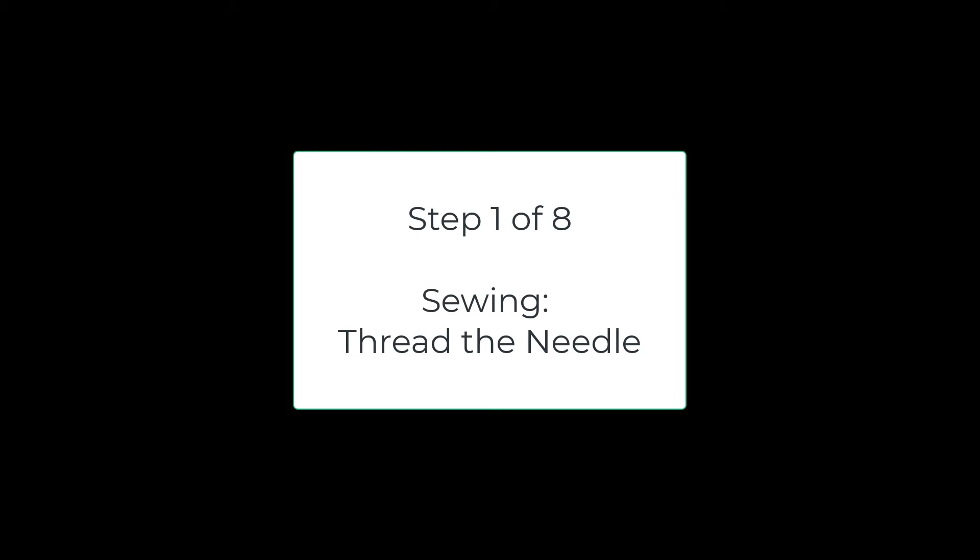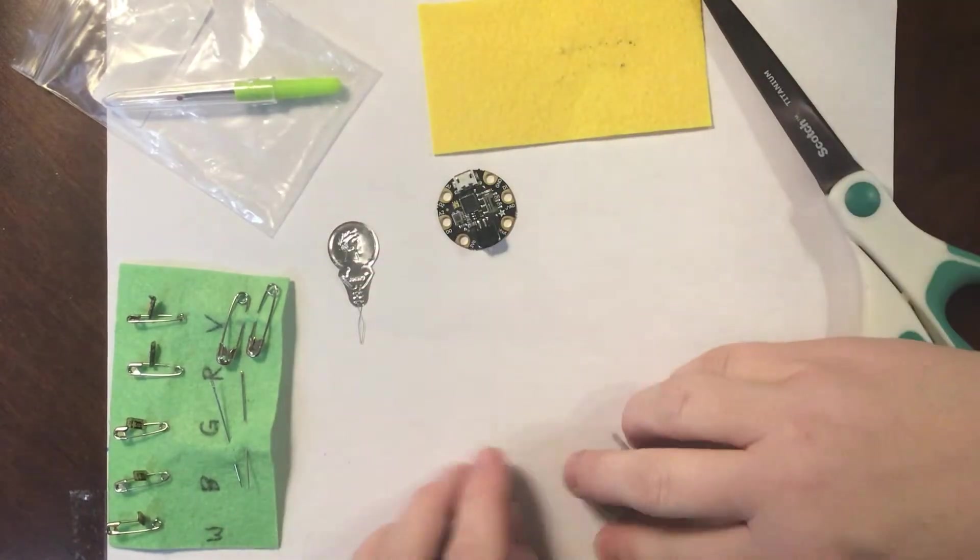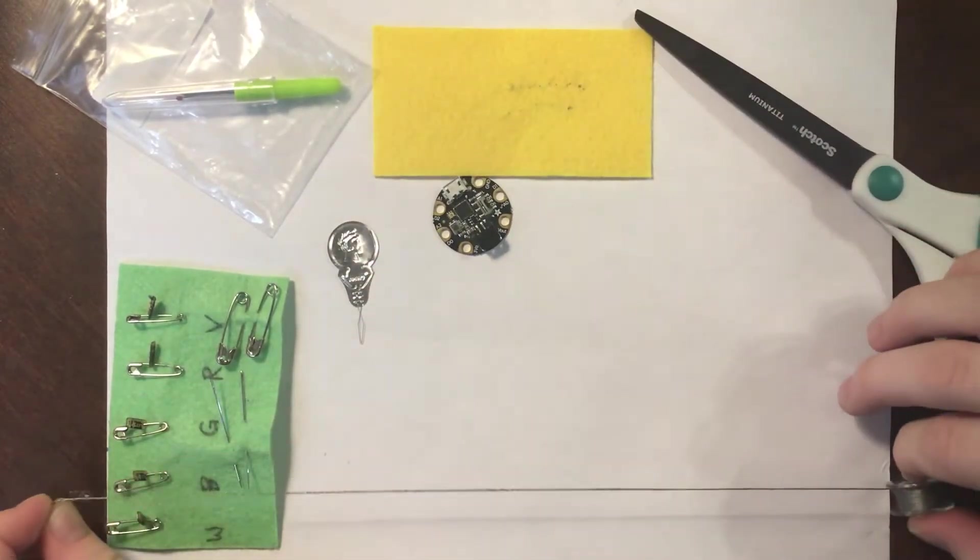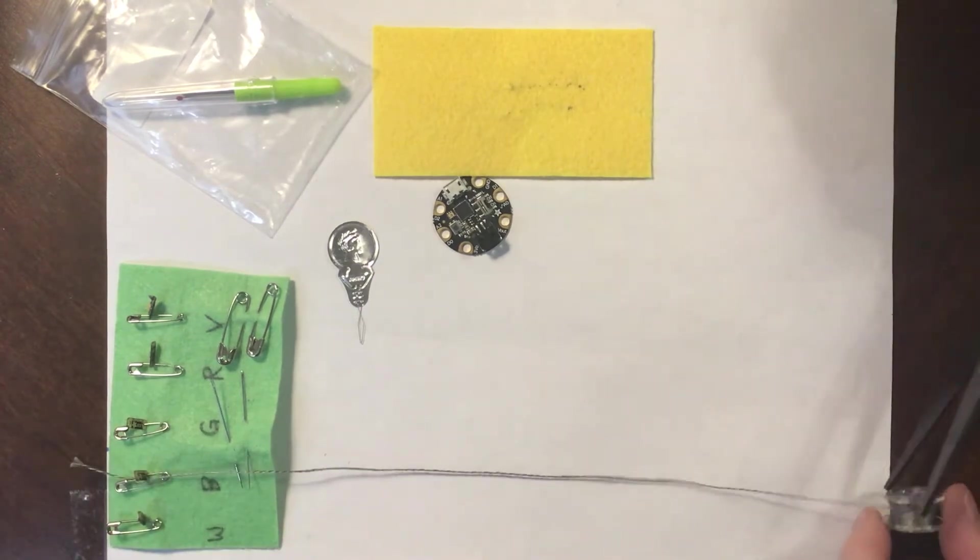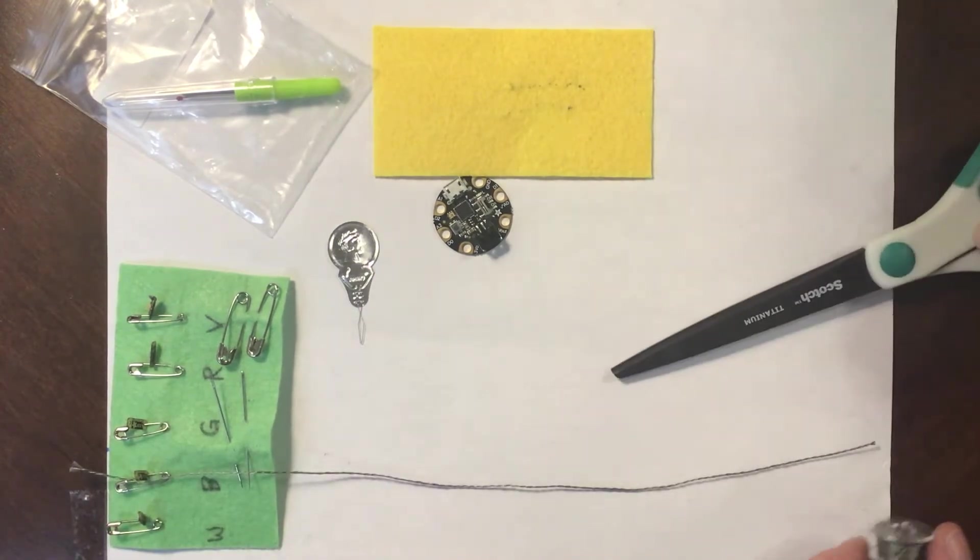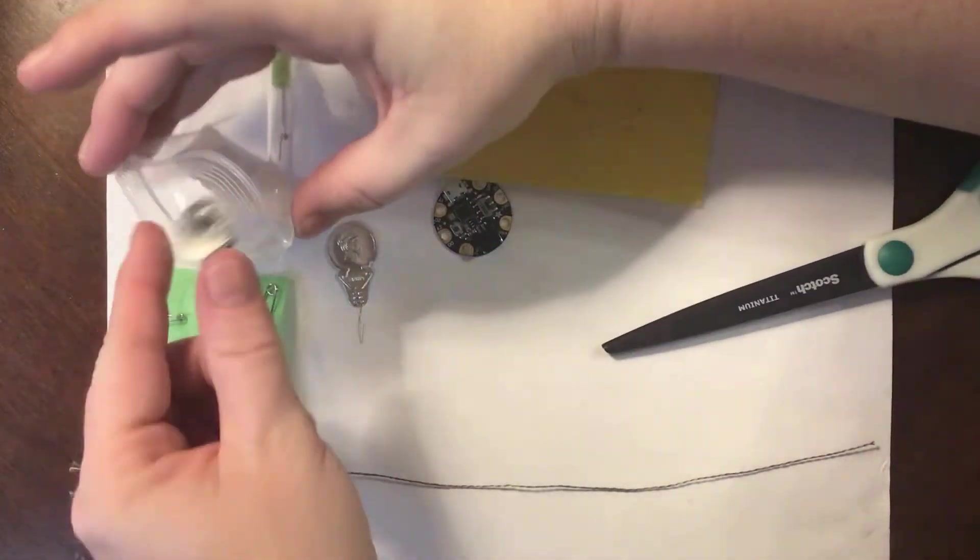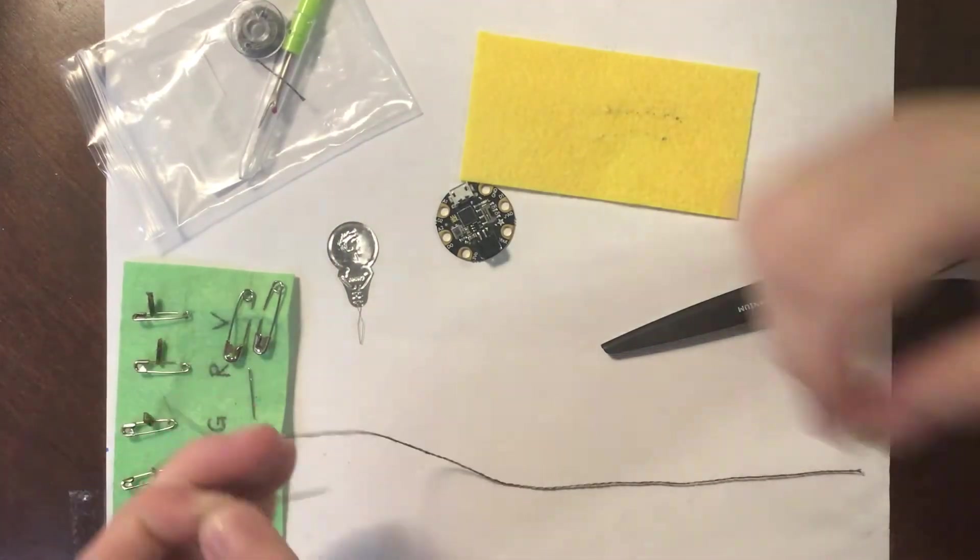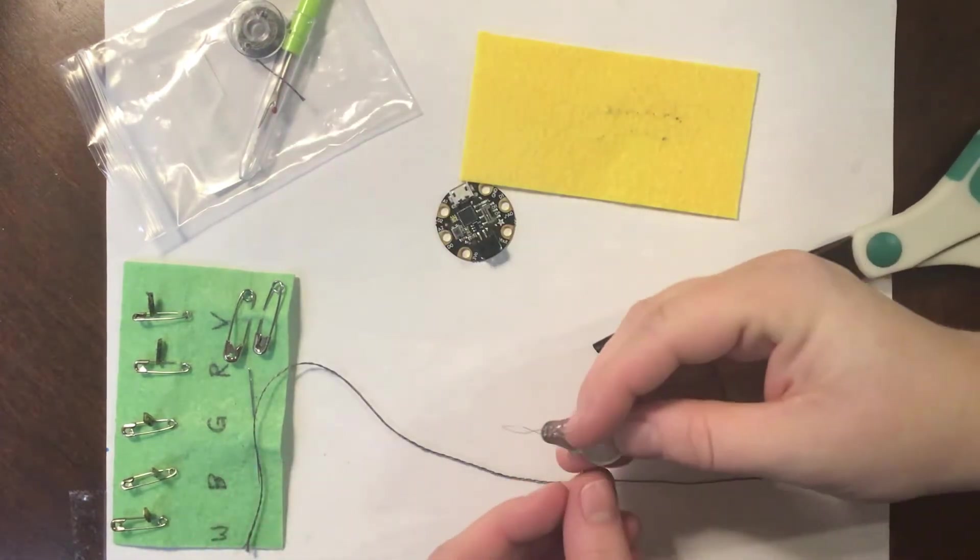Now it's time to get sewing. Let's thread the needle. If you're doing the same circuit I am with just one LED, then you'll need about 10 to 12 inches of thread. I'm just going to use my paper here to roughly measure it and snip it, and then put the thread away so it doesn't unravel somewhere I don't want it to. Then we can thread this needle.